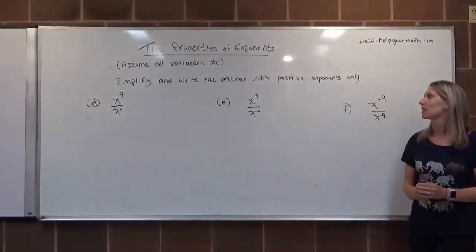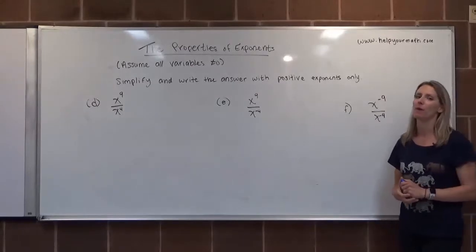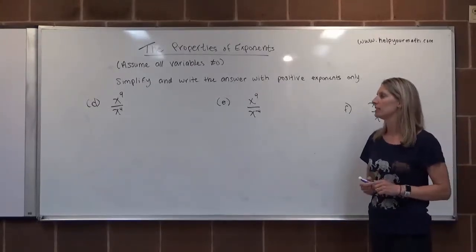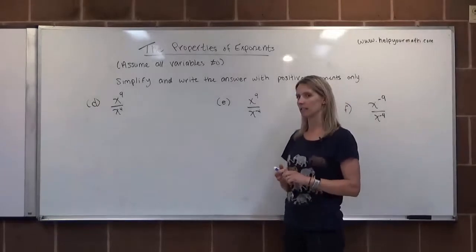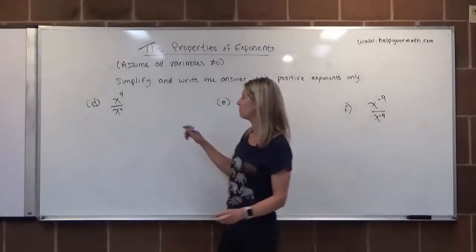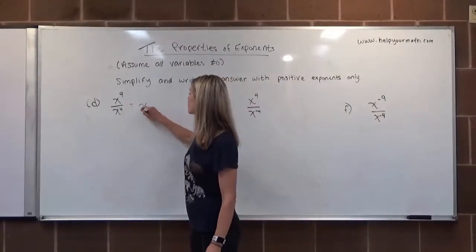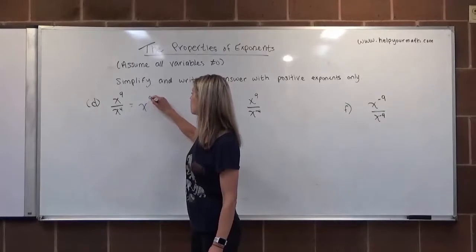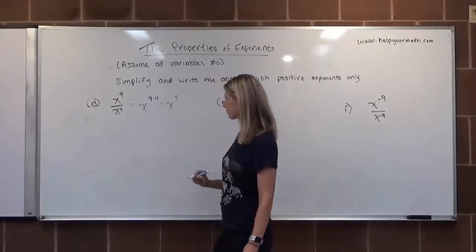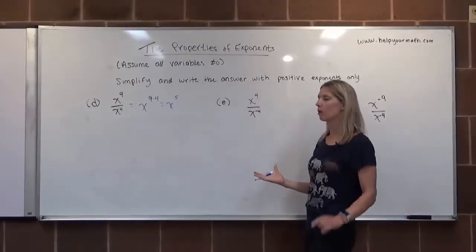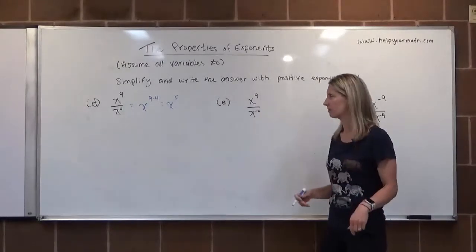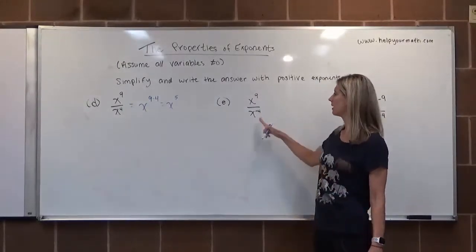Continuing to apply properties of exponents. For letter D, we have x to the 9th divided by x to the 4th. Applying same base division: x to the 9 minus 4, which is x to the 5th. The fraction goes away — it's x to the 5th over 1, but we don't need to worry about that.